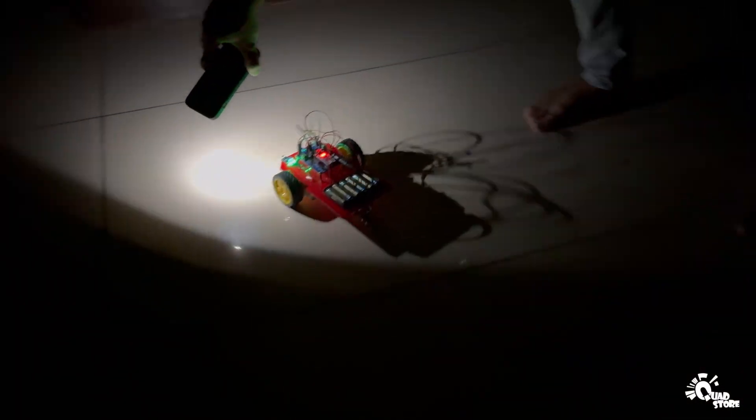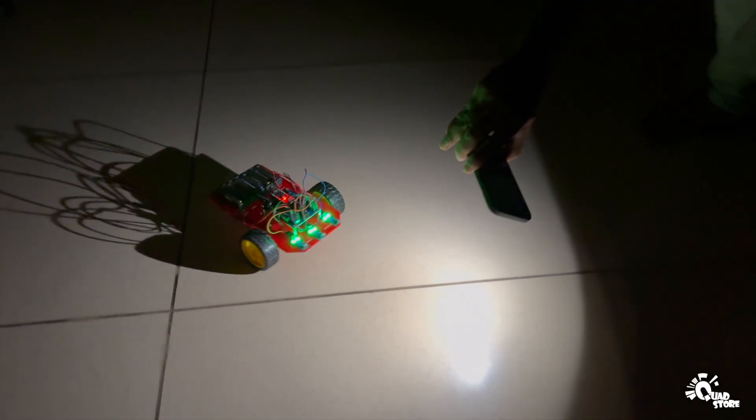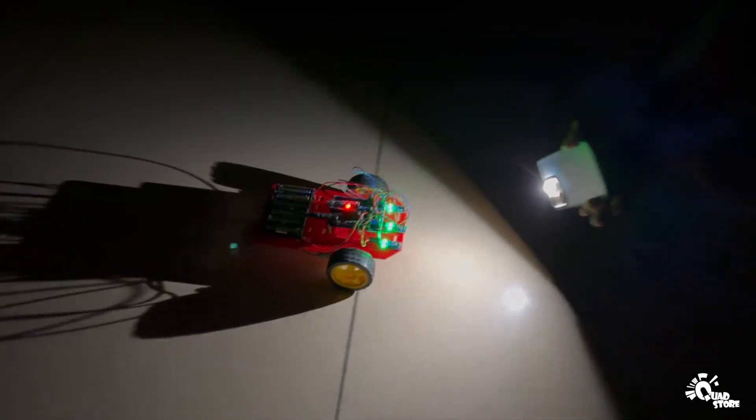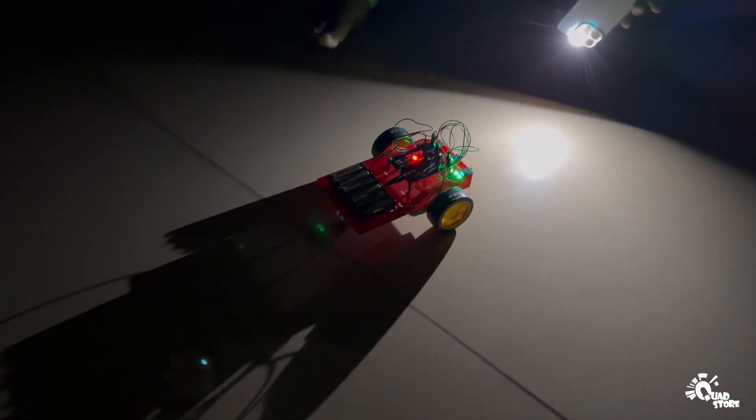To make it turn left, direct the light only on the left and center sensors. Similarly, to make it turn right, shine the light on the right and center sensors.